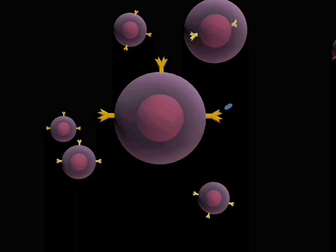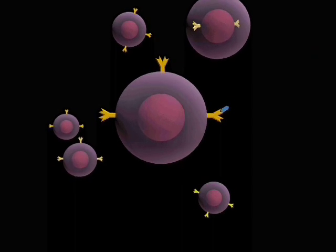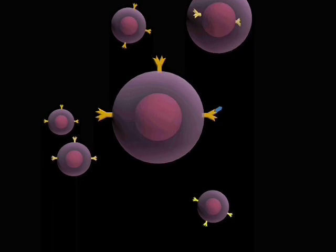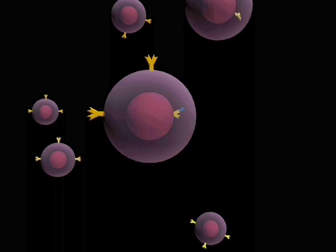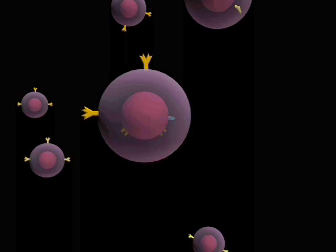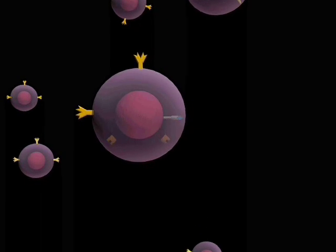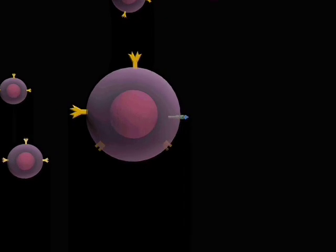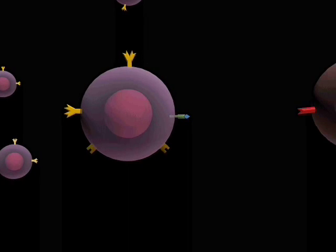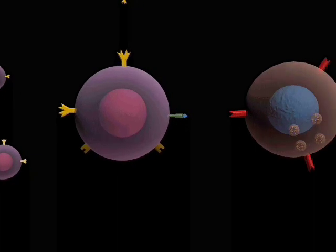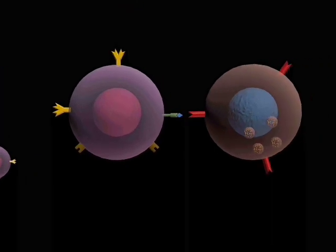The antigen is taken up from solution by the B-cell's surface immunoglobulin. It is internalized and processed. Antigen fragments are subsequently re-expressed on the B-cell's surface associated with MHC class II molecules for presentation to TH2 cells. Receptors for interleukin-4 are also induced on the B-cell.